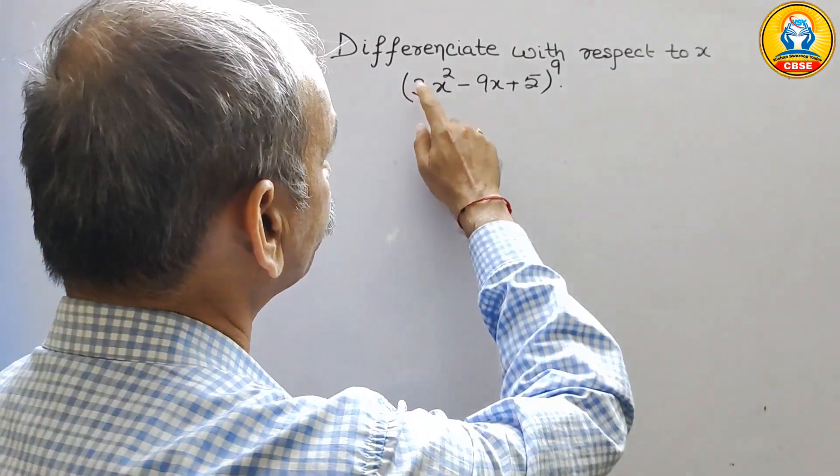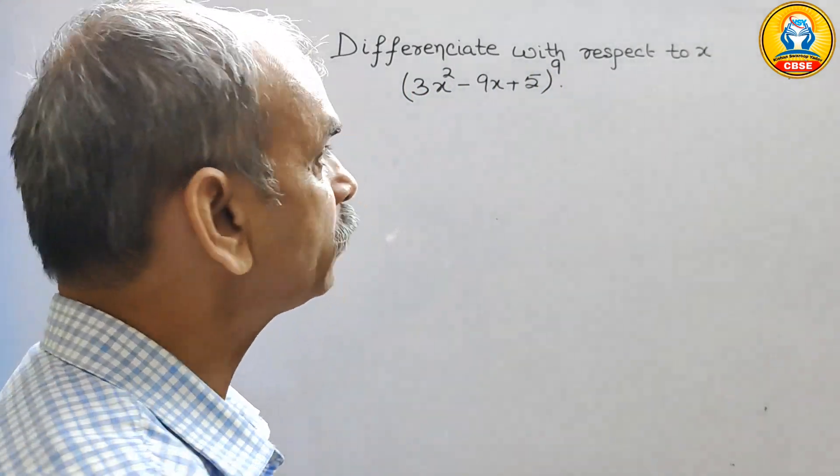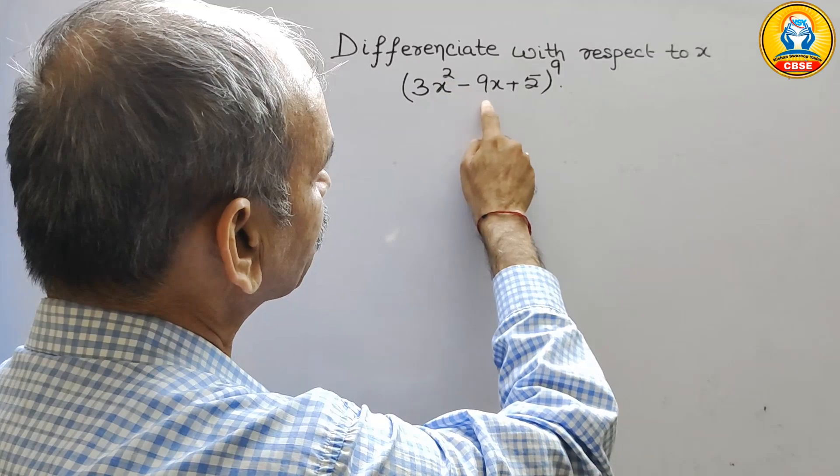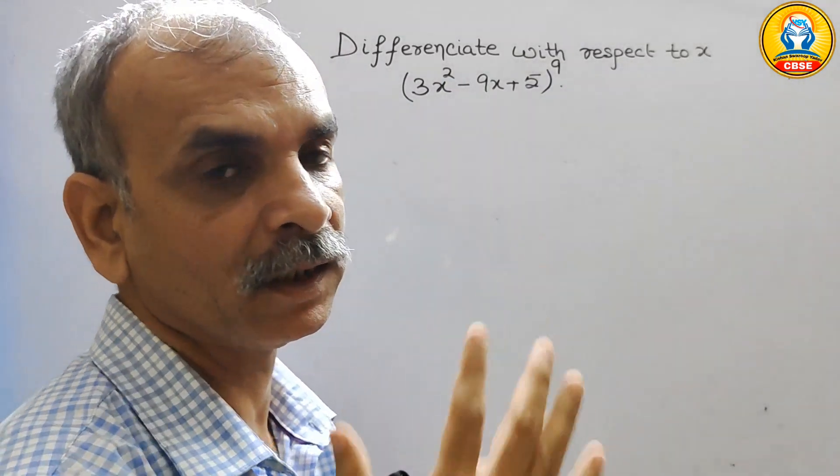Your question is differentiate with respect to x. See what they have given: 3x square minus 9x plus 5, and whole to the power of 9.